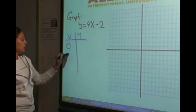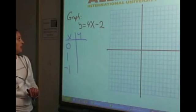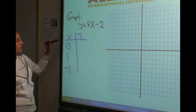So let's pick easy numbers, 0, 1, negative 1. So basically since we have x values here, let's plug it in.